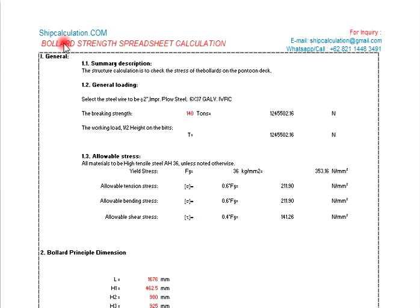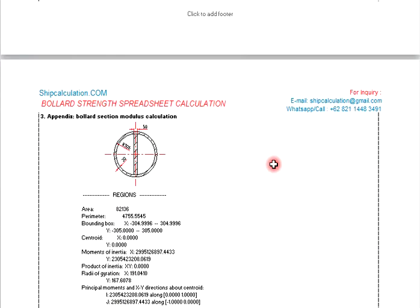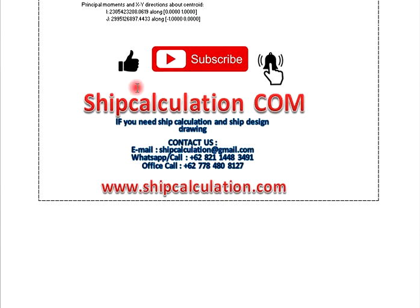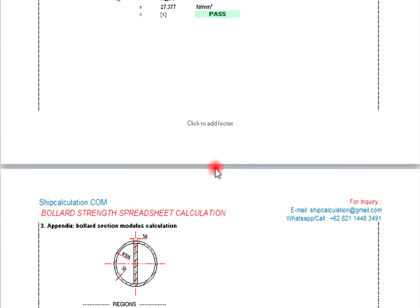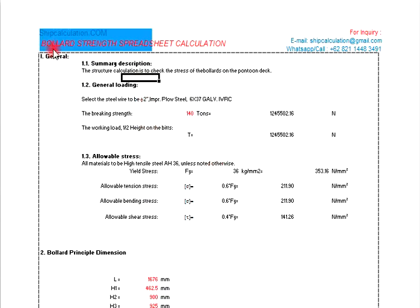This is the bollard strength spreadsheet calculation. Before that, you need to subscribe to our YouTube channel cipcalculation.com so that you can get the updated videos. The structure calculation is to check the strength of the bollard on the fountain deck.